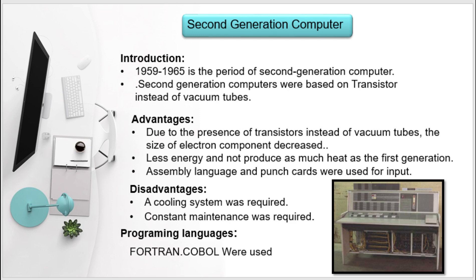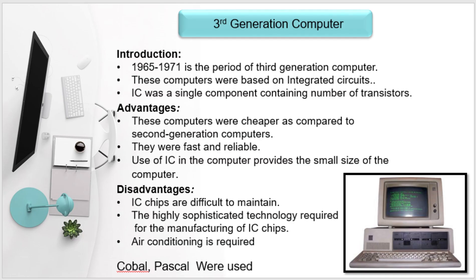In the second generation, programming languages were introduced and implemented for the first time. Moving on, we are developing the third generation of computers, which covers the period from 1965 to 1975.